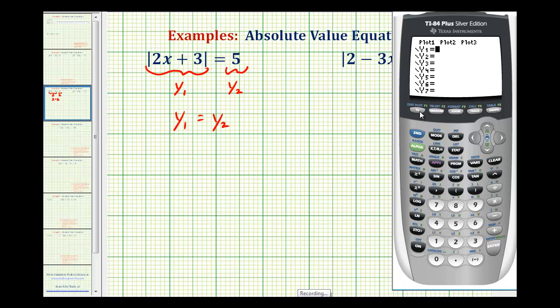So we'll press y equals, and for y1, we'll type in the absolute value of 2x plus 3. Then we'll press math, right arrow once to number, and the first option here is abs for absolute value. So we'll press enter, and then 2x plus 3, close parenthesis, and then y2 is equal to 5.